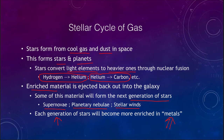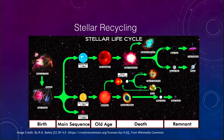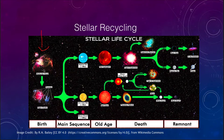Let's look at stellar recycling in picture form to get an idea of how it works — how we go from a nebula back out into a nebula once again. We can start off with a molecular cloud, something like the Orion Nebula, which is in the process of forming stars. Eventually it will form a cluster of stars, and what happens next depends on the mass of the star.